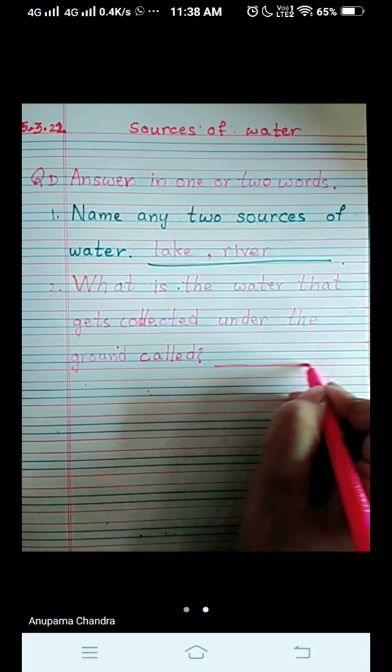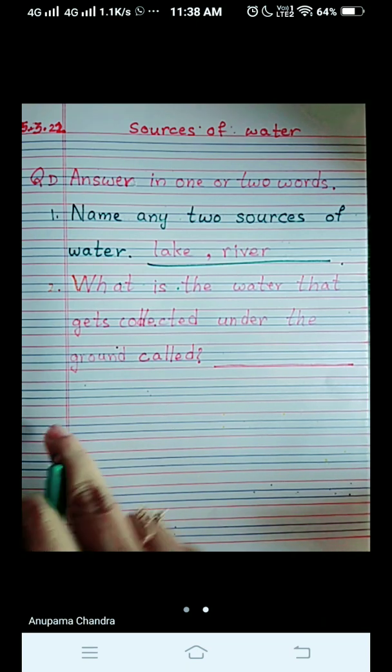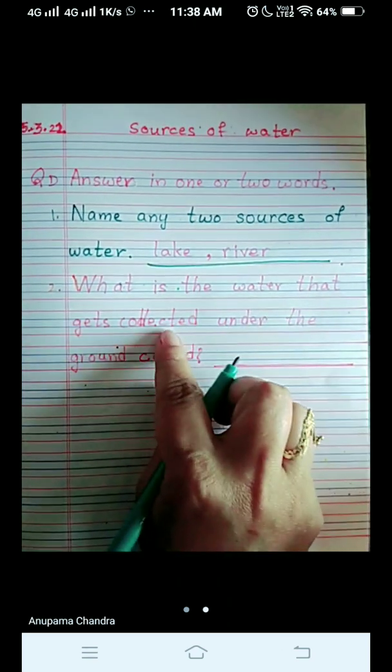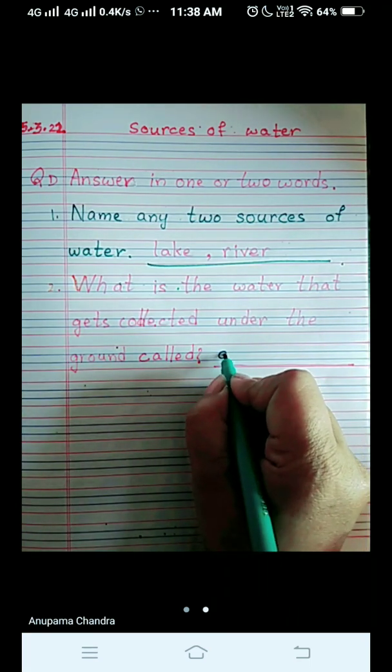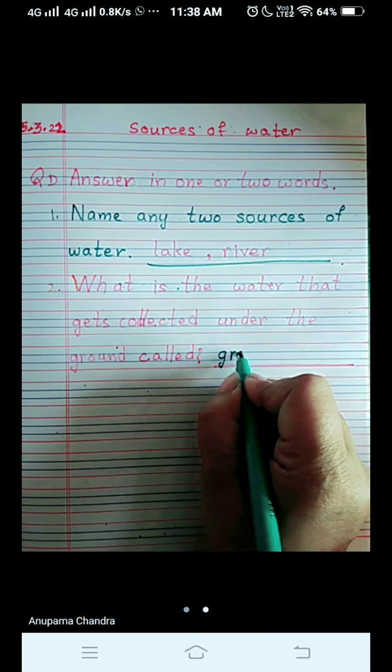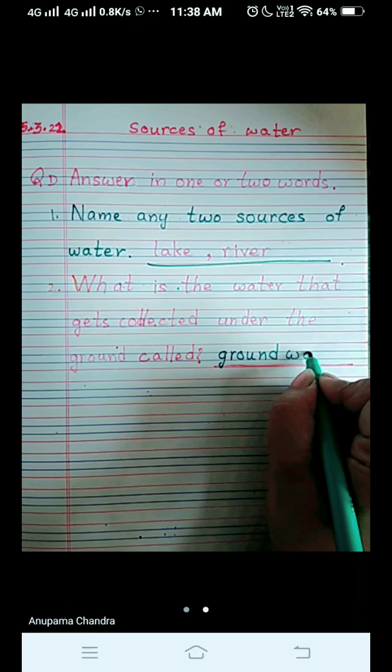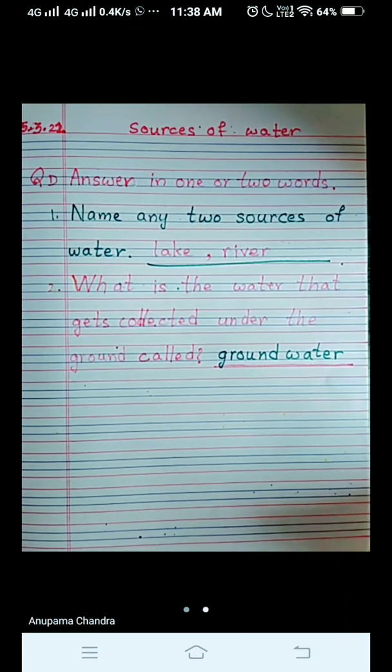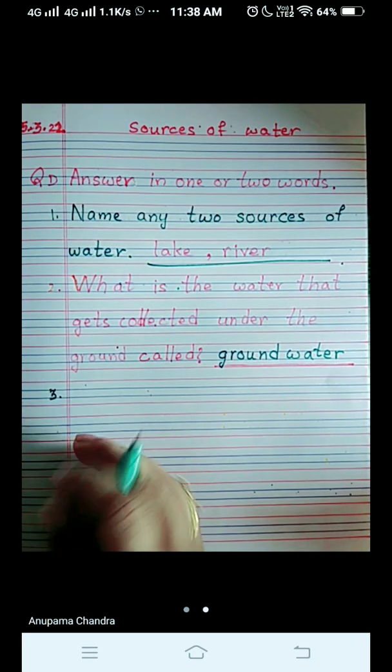And put a big dash for writing the answer and the answer is ground water. What is the water that gets collected under the ground? It is called ground water. So write with me, G-R-O-U-N-D ground water, W-A-T-E-R water, ground water.